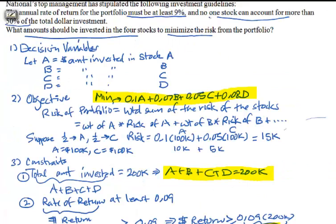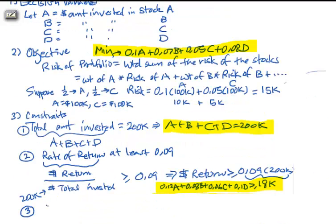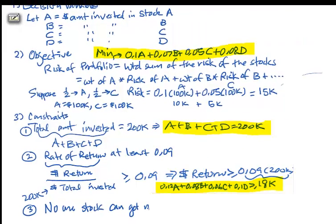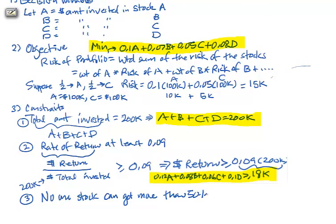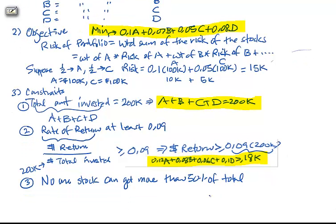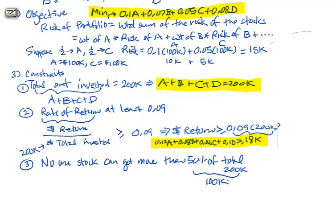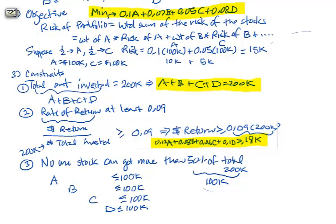No one stock can account for more than 50% of the total dollar investment. Since the total is $200,000, 50% of that is $100,000, meaning $100,000 is the limit on how much you can invest in each stock. We need a constraint for each stock: A ≤ 100,000; B ≤ 100,000; C ≤ 100,000; D ≤ 100,000.